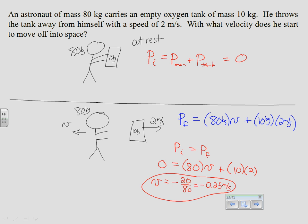Since the initial momentum is zero, you could have set the momentum of the oxygen tank equal to the momentum of the astronaut, knowing they'll be equal and opposite. That gives 0.25 meters per second to the left. Setting up with V as a positive variable, if it's supposed to be negative, it will work out to be negative in the end.